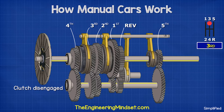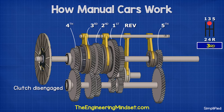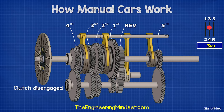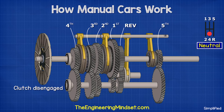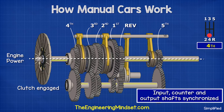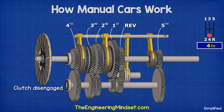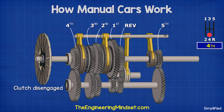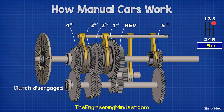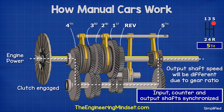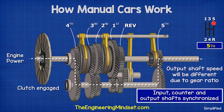For fourth gear, we disengage the clutch and use the gear shifter to disengage the third gear sleeve. Then we move the shifter into fourth gear, which pushes the sleeve and the blocker ring. This synchronizes the speed and interlocks the fourth gear. For fifth gear, we disengage the clutch and use the gear shifter to disengage the fourth gear sleeve. Then we move the shifter into fifth gear, which pushes the sleeve and blocker ring. This synchronizes the speed and interlocks the fifth gear.